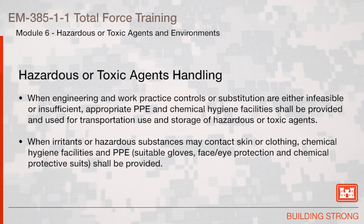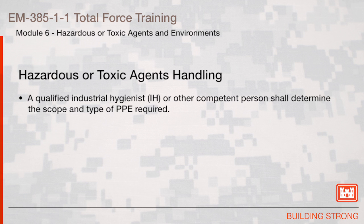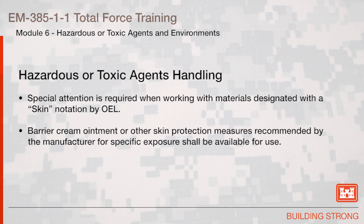When engineering and work practice controls or substitution are either infeasible or insufficient, appropriate PPE and chemical hygiene facilities shall be provided and used for transportation, use, and storage of hazardous or toxic agents. When irritants or hazardous substances may contact skin or clothing, chemical hygiene facilities and PPE, including suitable gloves, face and eye protection, and chemical protective suits shall be provided. A qualified industrial hygienist or other competent person shall determine the scope and type of PPE required. Special attention is required when working with materials designated with a skin notation by OEL. Barrier cream ointment or other skin protection measures recommended by the manufacturer for specific exposure shall be available for use.